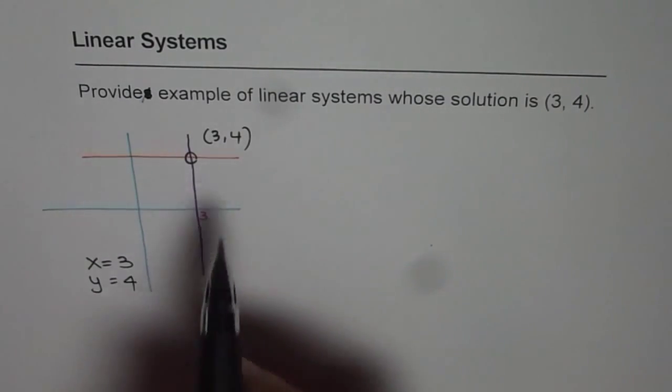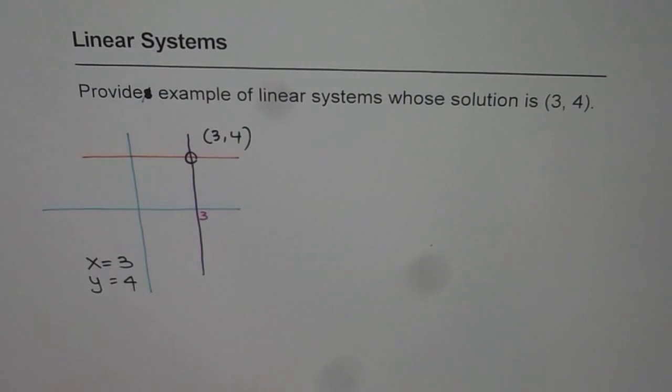And their intersection will be at (3, 4). So that is the best, I should say, and the easiest way to find the solution. That is, give a linear system. So these are the two equations.